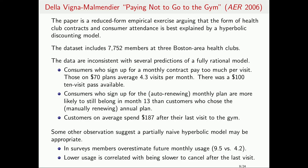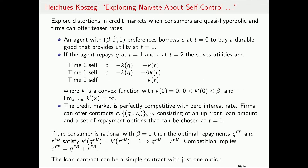Other observations suggest the partially naive model may be better than the fully rational explanation. In surveys, people say they'll go to the gym more than twice as much as they actually go. And there's a correlation between lower gym usage and taking longer to cancel after stopping — some people seem more rational and some less rational, with less rational people doing multiple irrational things together like not canceling and not going much.